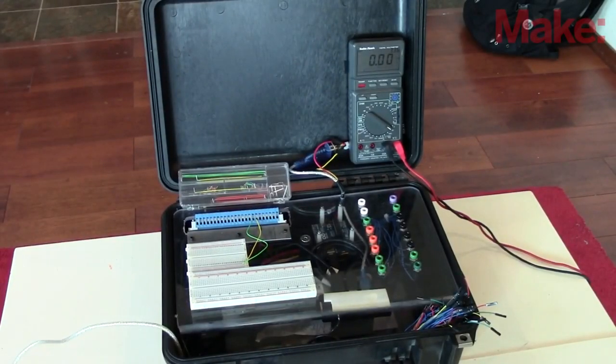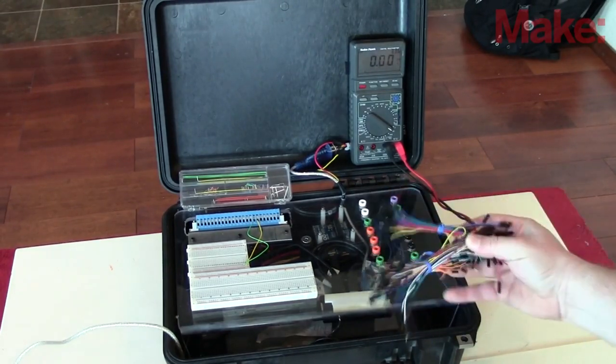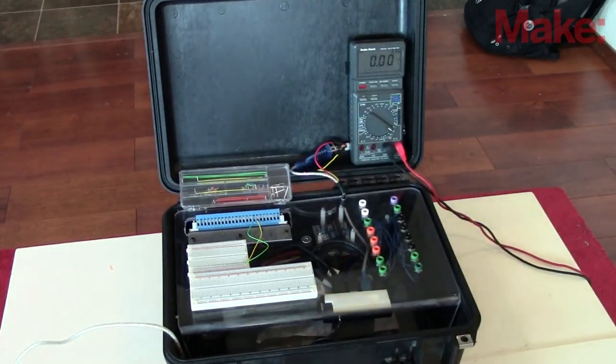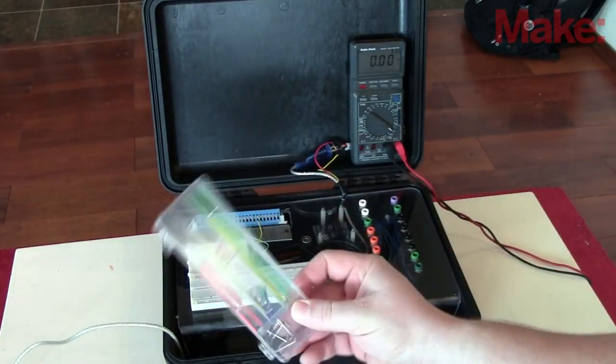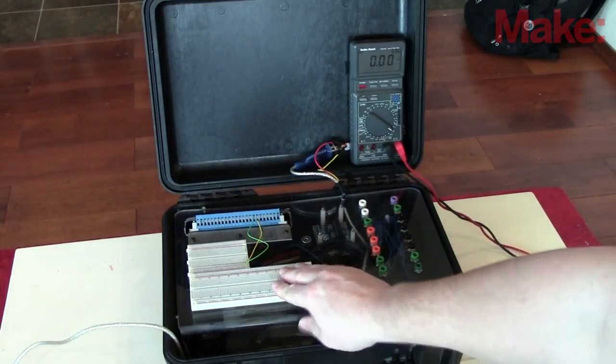The prototyping kit has plenty of features. For instance, a front pocket to carry your jumper wires. Always need plenty of jumper wires. Even more jumper wires over here. Two breadboard areas, a smaller and larger, giving plenty of prototyping room.